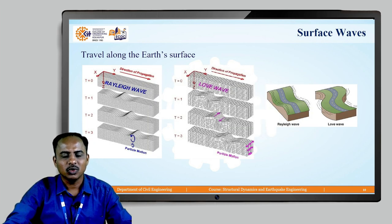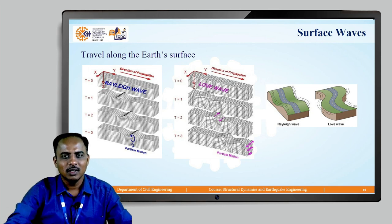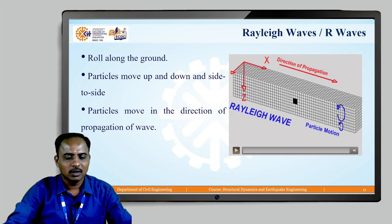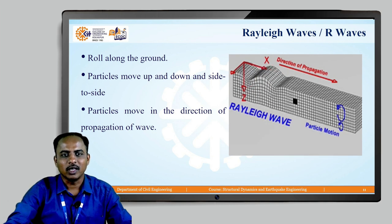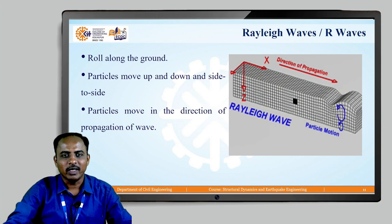Then we have surface waves. Whenever these body waves reach the surface, they travel along the surface — these are called surface waves. They travel along the earth's surface as Rayleigh waves and Love waves. The Rayleigh wave moves in a rotary motion; it rolls along the ground. The particles move up and down as well as side by side, in the direction of propagation of the wave.